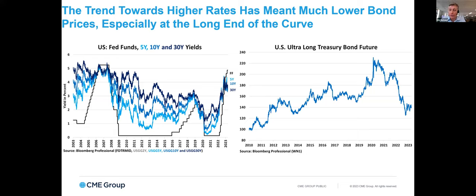A lot of people have a stereotype that trading interest rates is boring because the prices of interest rate futures don't move very far. But that's not necessarily true. When you look at our ultra-long bond future — roughly around the 25 to 30-year part of the yield curve — that future fell by roughly 50% off of its highs. It's actually a much bigger downside move than we've seen with the S&P 500. Anybody who saw the inflation coming and positioned for it in that market made more money than they did by being short the stock market last year. The prices of bonds move inversely with interest rates, so as bond yields have been rising, the price of those bonds has been falling.